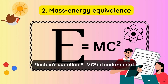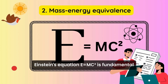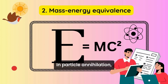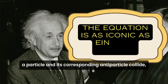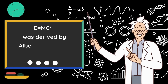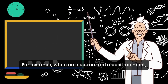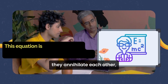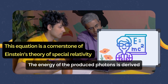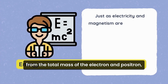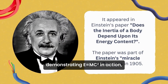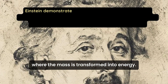Einstein's equation E equals mc² is fundamental in understanding particle annihilation and pair production. In particle annihilation, a particle and its corresponding antiparticle collide, converting their mass into energy. For instance, when an electron and a positron meet, they annihilate each other, resulting in the creation of gamma photons. The energy of the produced photons is derived from the total mass of the electron and positron, demonstrating E equals mc² in action, where the mass is transformed into energy.